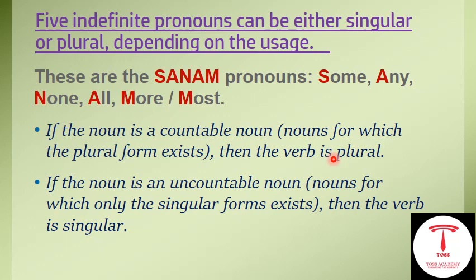For the nouns which have a plural form — that is, countable nouns — we use a plural verb. If the noun following the pronoun is an uncountable noun, then the verb must be singular. These are the two conditions: countable noun takes plural verb, uncountable noun takes singular verb.